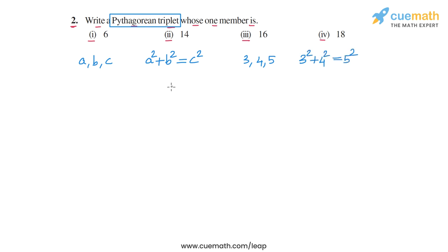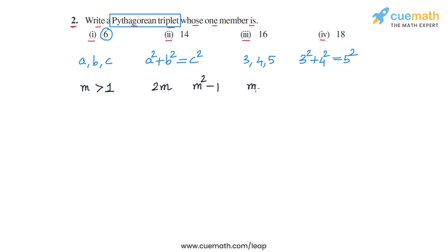In this question, we have to find a Pythagorean triplet of which the given number is a member. To do this, we will use a result from the NCERT main text which says that for any integer M ≥ 1, the triplet of numbers 2M, M² − 1, and M² + 1 will surely form a Pythagorean triplet, because (2M)² + (M² − 1)² = (M² + 1)². This is the result we are going to use.